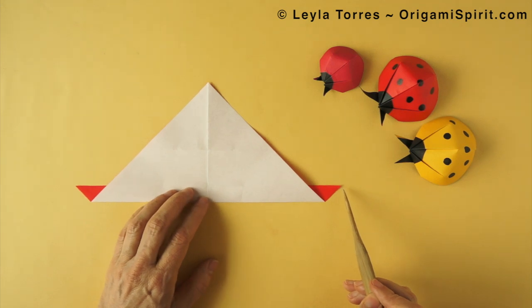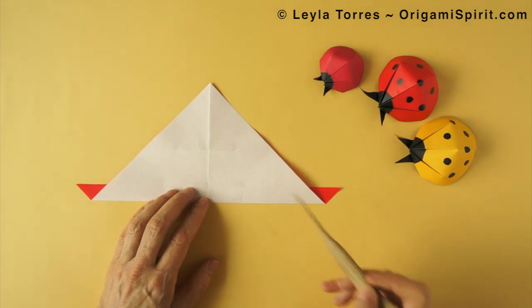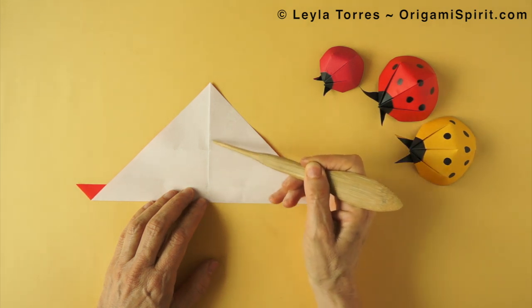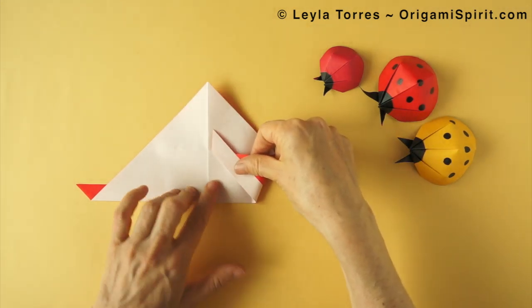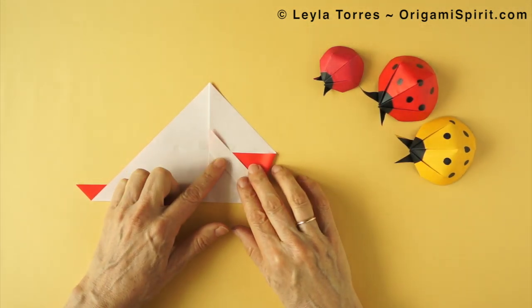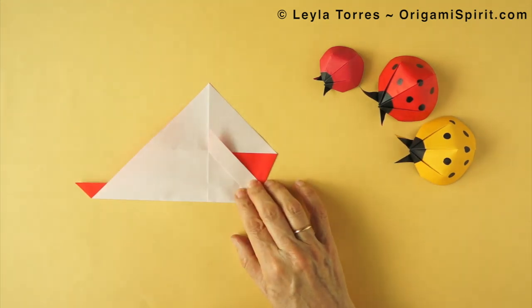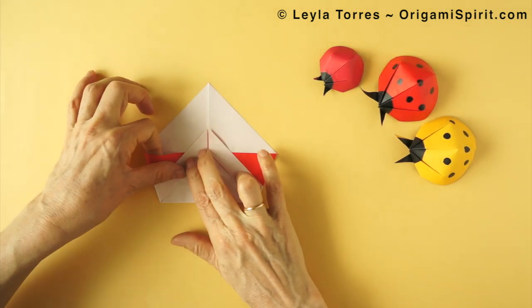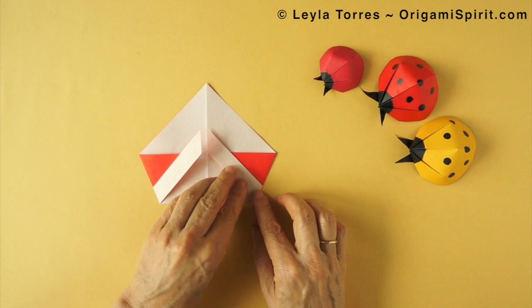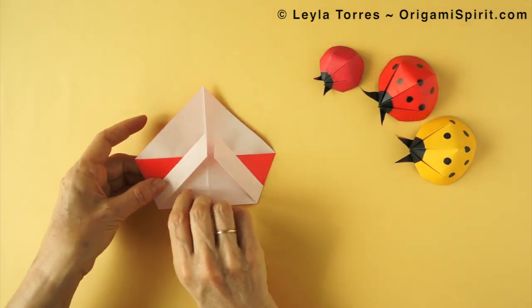This short edge at the right. We are going to bring it so it aligns with the vertical line. And we create a fold about here. We bring this short edge to meet this one. At this point, we can turn it over.